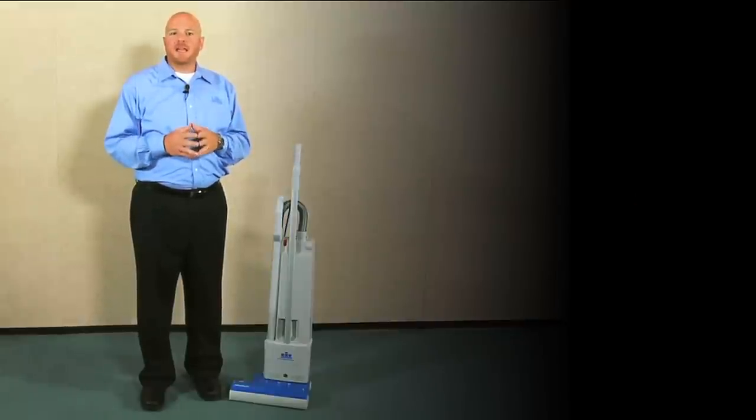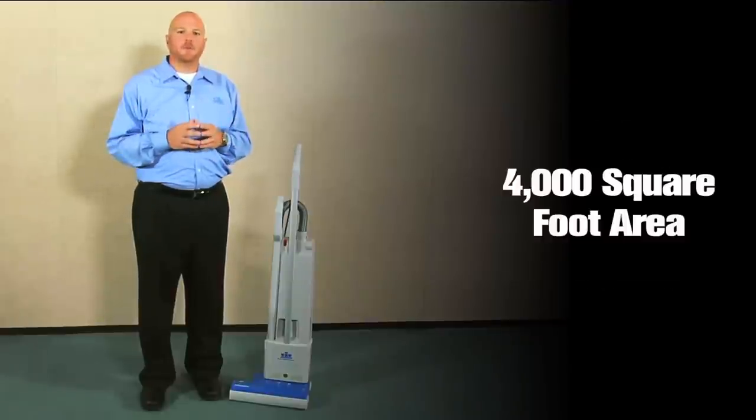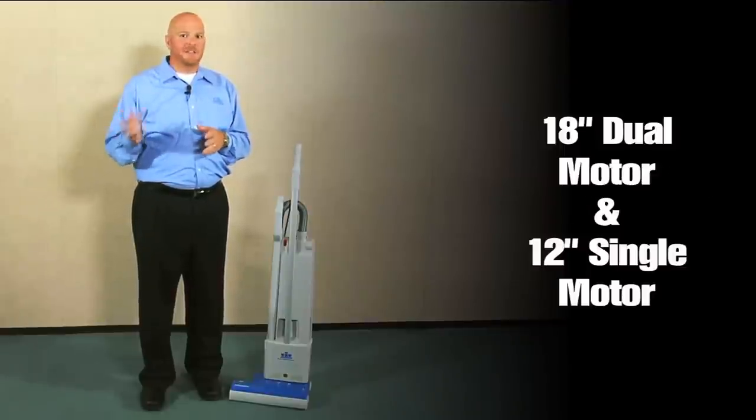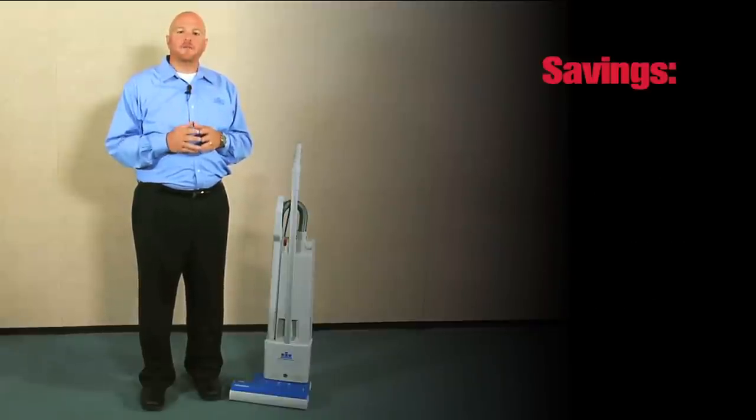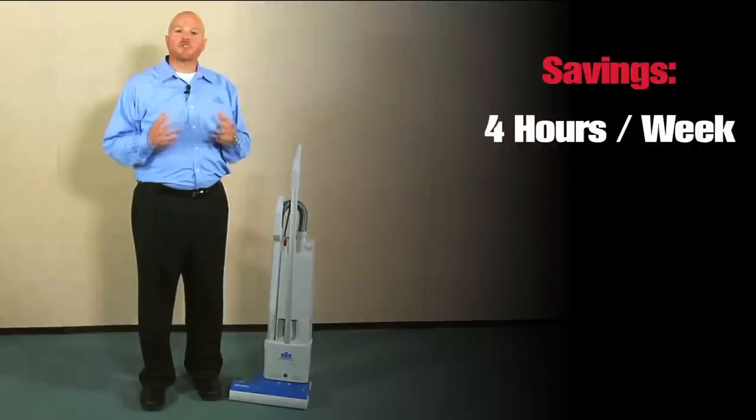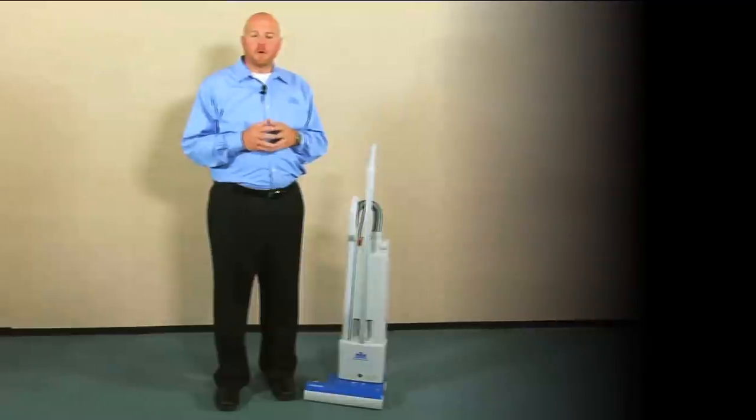Because of this, if you vacuum a 4,000 square foot area with an 18 inch dual motor and a 12 inch single motor upright, you would save 4 hours per week or 208 hours per year by using the dual motor upright.